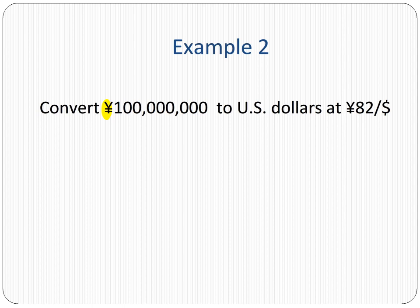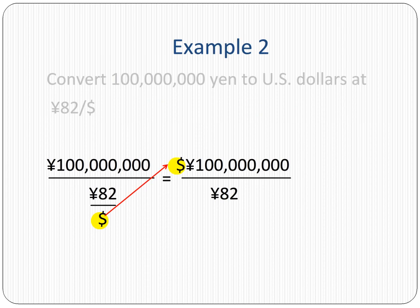When the currency we are trying to convert appears in the numerator of the code, we divide. That's what we are going to do in this example: we are going to divide.